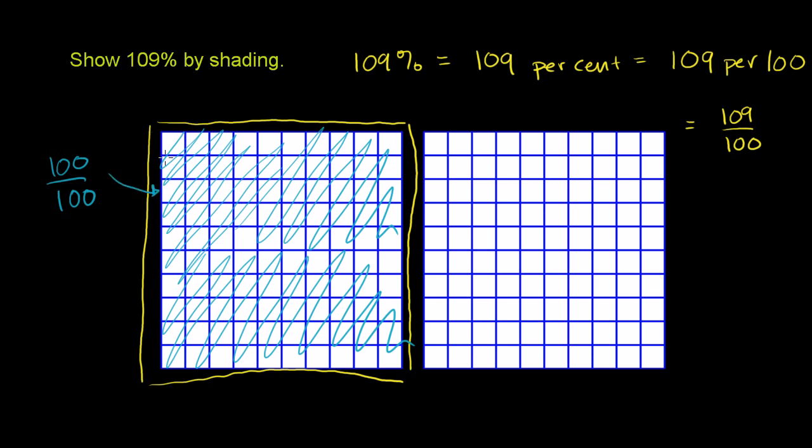The question is saying show us 109% by shading. So we already did 100 per 100, but we need to do another 9. So let's shade in another 9. So now we have 1, 2, 3, 4, 5, 6, 7, 8, 9. So this piece right here...